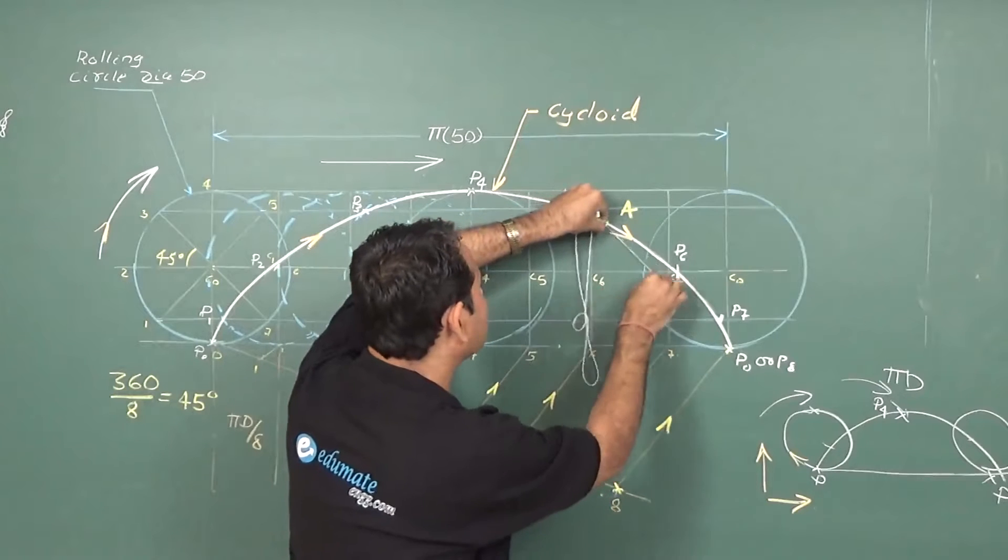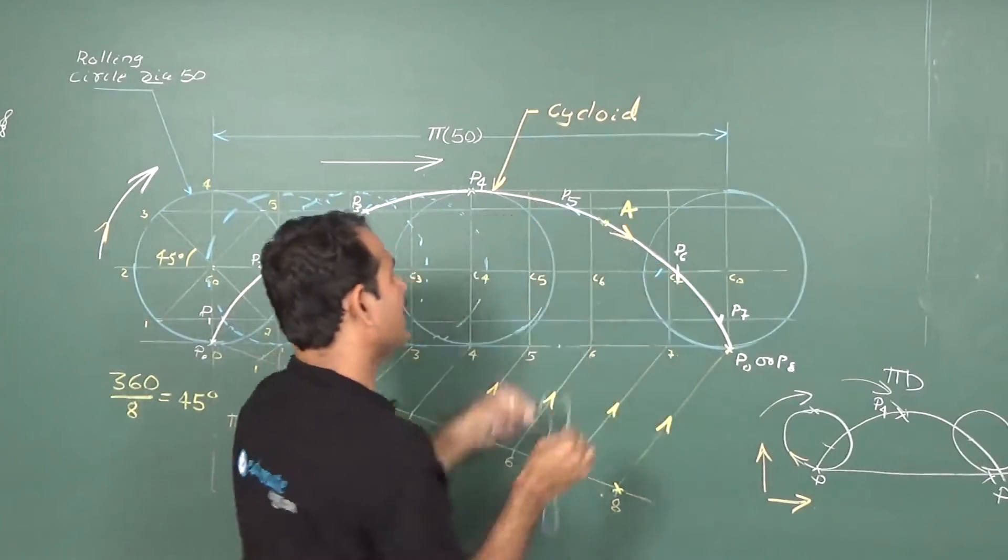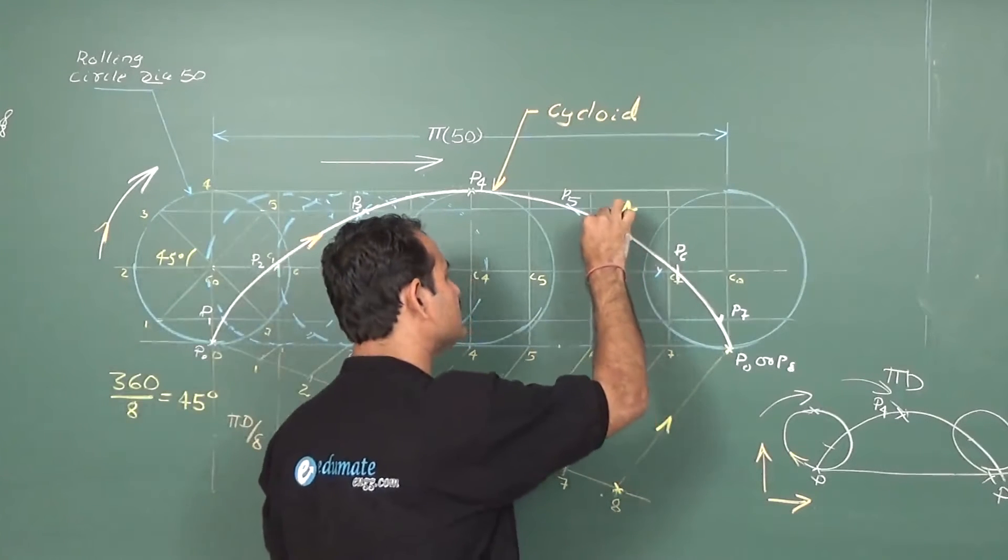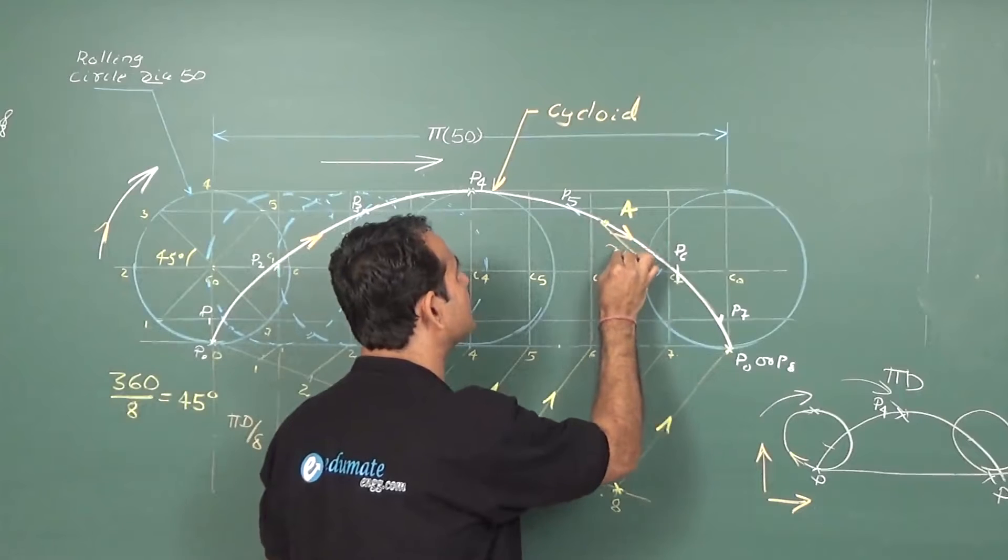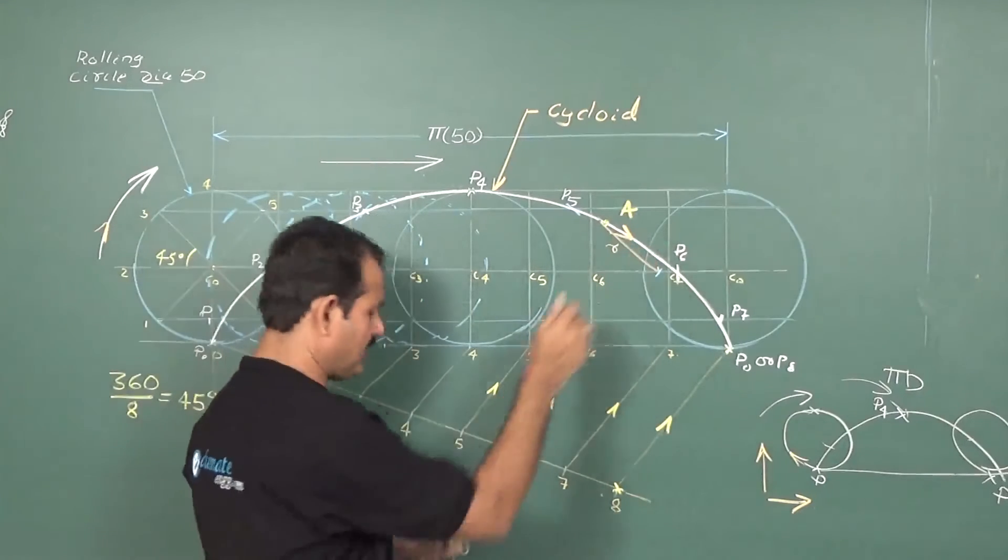Where exactly the center for this curve has to lie. So, I will cut like this. It is somewhere over here. So, this distance what I have cut is the radius. So, take this radius, cut on the center line.